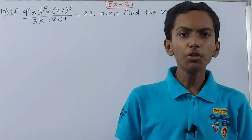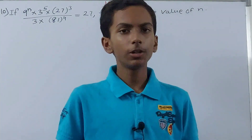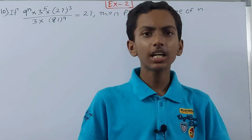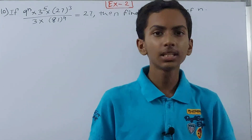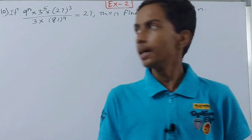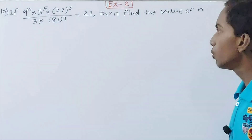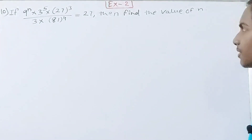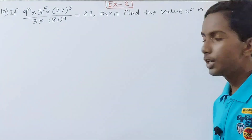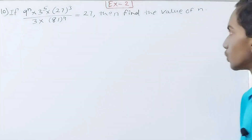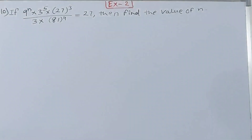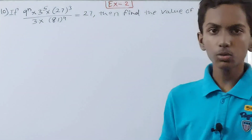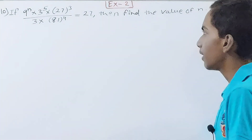Hello friends, welcome back to my YouTube channel. In this video we are going to solve ICC Mathematics Class 8, Chapter 2, Exponents, Exercise 2, Question number 10. It asks: if 9 to power n into 3 to power 5 into 27 cubed, upon 3 into 81 to power 4, is equal to 27, then find the value of n. We have to solve this exponential equation to find the value of a variable.